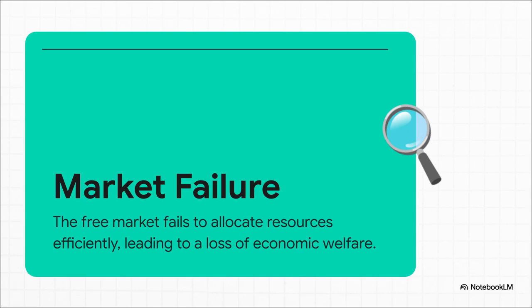Here's the official definition. Market failure is when our robot starts glitching — it's no longer making the best choices for society as a whole. Instead of efficiently distributing resources, it's creating waste, or maybe it's not producing enough of the stuff we actually need. The bottom line is the outcome isn't optimal, and social well-being takes a hit.